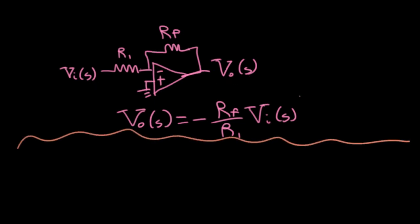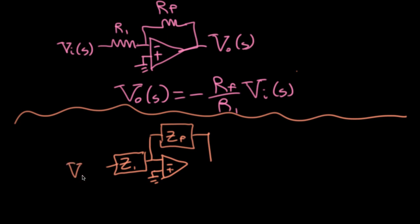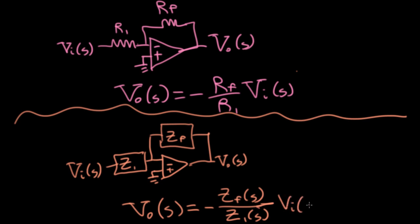And I should mention this VO and this VI are different than the VO and VI we had at the start of the lecture. So let's extend this idea a bit. I could very well make these be generic impedances. Here's a feedback impedance. So I have this impedance going from the input to the virtual ground. And my more general formula just replaces the resistances with impedances.